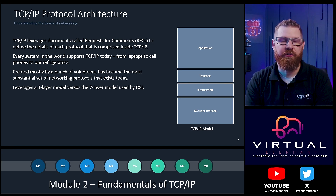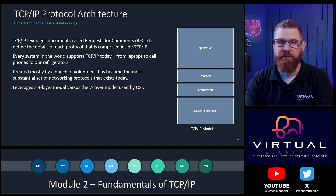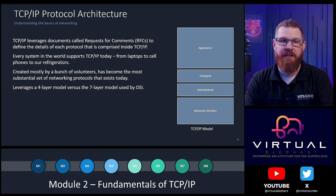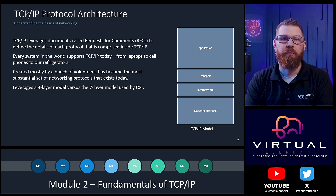Everything from your laptop to your cell phone to even our refrigerators and other IoT devices. It consolidates down from the seven-layer OSI model to four layers: the network interface layer, the internetwork layer, the transport layer, and the application layer. As we discuss the TCP-IP model, you'll hear me refer to things as L3 and L4 — references back to the OSI model, which is standard in networking terms today.